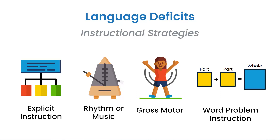Use graphic organizers along with explicit language and practice using those vocabulary words you're learning. We also recommend rhythm and music. These students like to move and are often quick to pick up rhythm or music. Use similar wording each time you do an activity, such as: how many groups of five can I make out of 20?